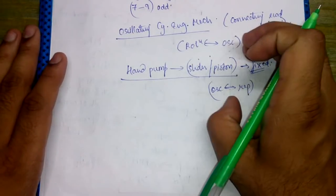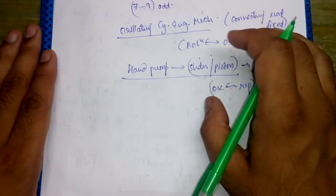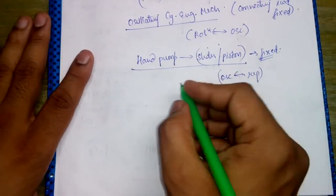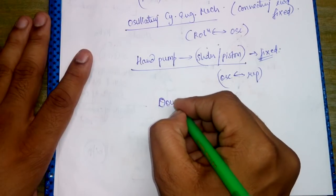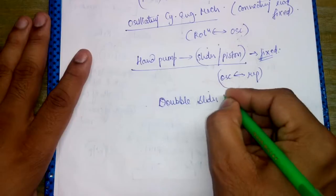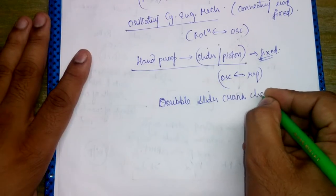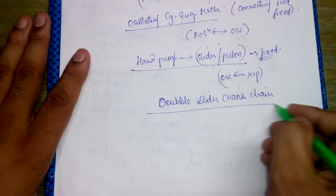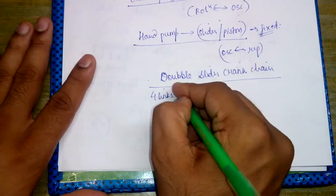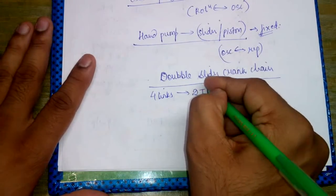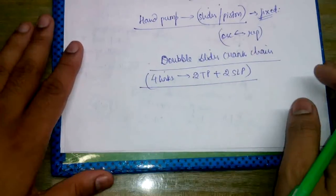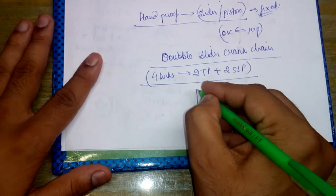With this we come to the end of the various inversions of the single slider crank chain. Now we shall start with the double slider crank chain mechanism. In the double slider crank chain we have a total of four links — two turning pairs and two sliding pairs.